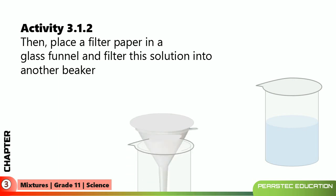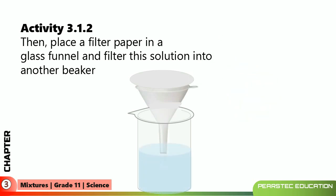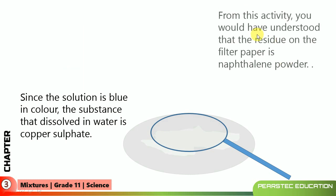Then place a filter paper into a glass funnel and filter this solution into another beaker. Once filtered, you will see something on that filter paper — you can notice a white substance on it. Allow the residue on the filter paper to dry and observe with a hand lens, and observe the filtrate as well. Since the solution is blue in color, the substance that dissolved in water is copper sulfate. The residue on the filter paper is naphthalene powder, and the copper sulfate has separated out.